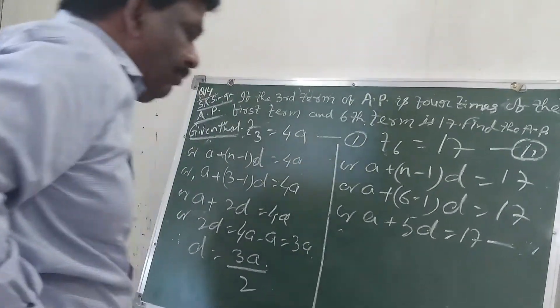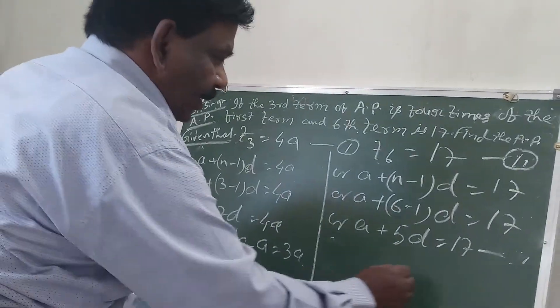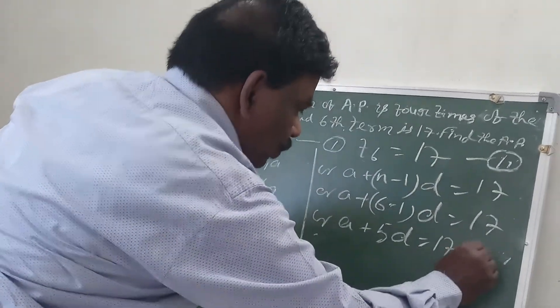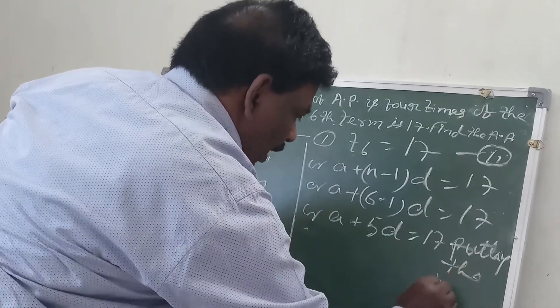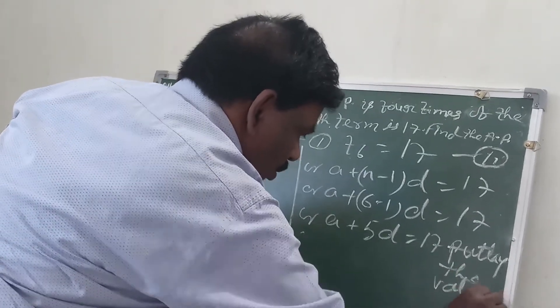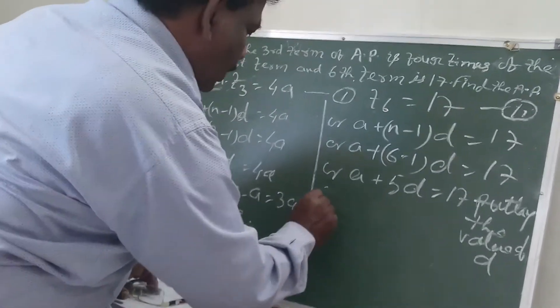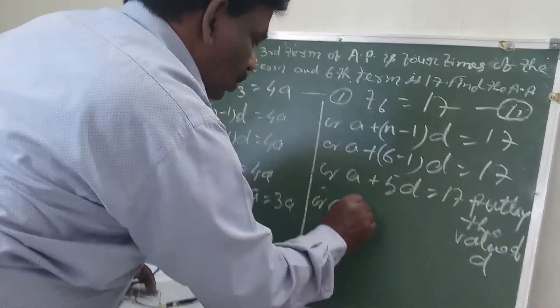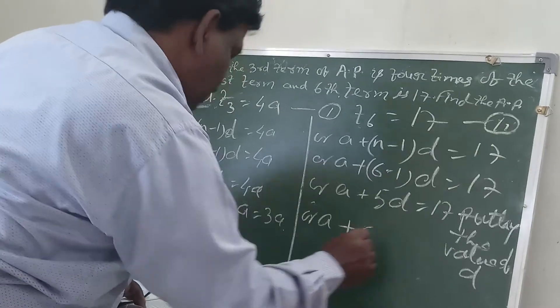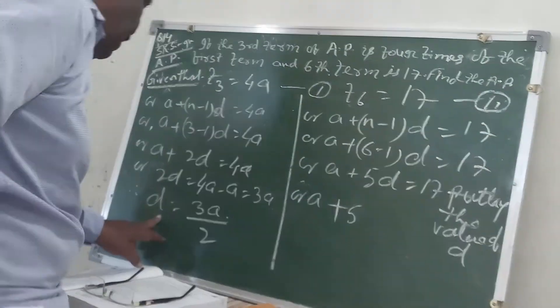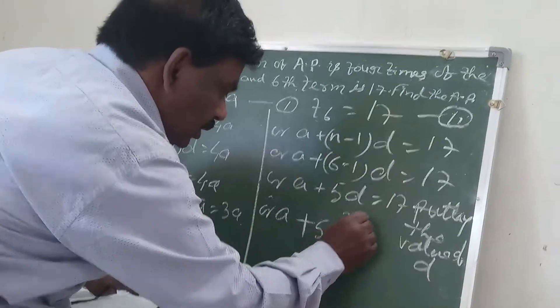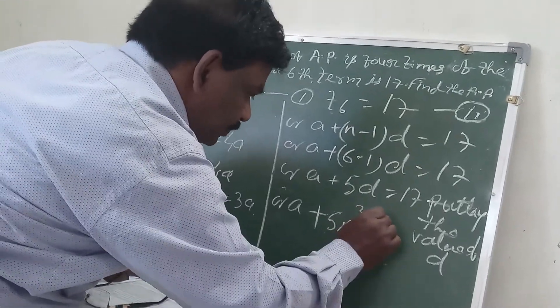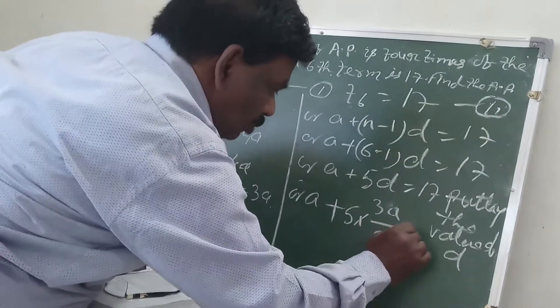Putting the value of D, let's get the value of D. So I will find that A plus 5 into 3A by 2 equals 17.